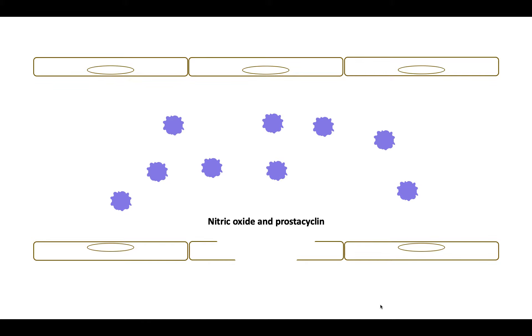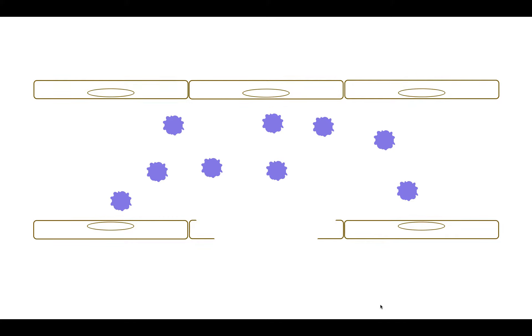At the site of the broken endothelium, nitric oxide and prostacyclin production is disrupted. The cessation of nitric oxide production means that its vasodilatory properties are lost. In response, the endothelium tries to stem the tide of blood loss by coming together in a process of vasoconstriction. Additionally, platelets are no longer inhibited from approaching the endothelium.